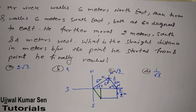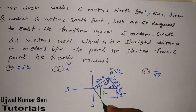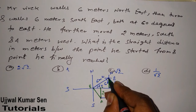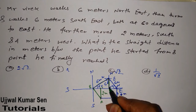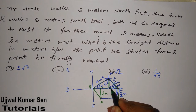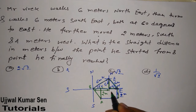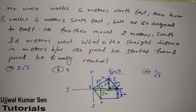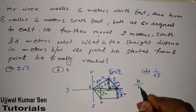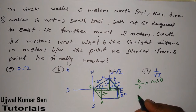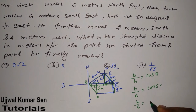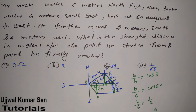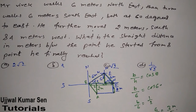Draw a straight line from start to finish — it's very helpful. From start to a midpoint the distance is two meters. Label the points A, B, and C. The two triangles formed are the same size. To find the horizontal distance, we use cos theta: b divided by h equals cos theta. Here h is 6 meters and theta is 60 degrees, so b divided by 6 equals cos 60 which is 1/2. Therefore b equals 3 meters.